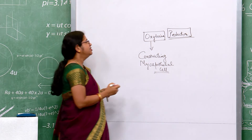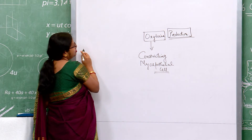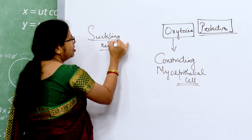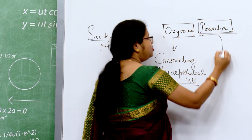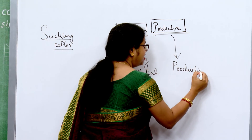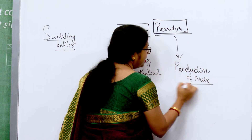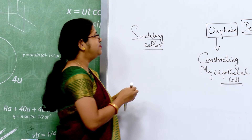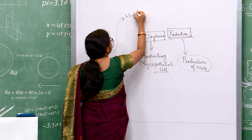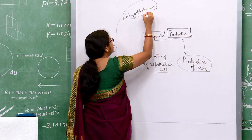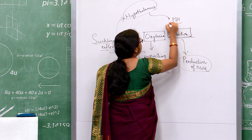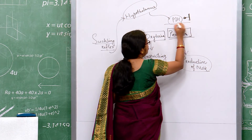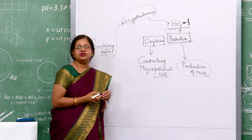In normal conditions, prolactin secretion is inhibited. Only when there is a cry or sound from the baby, or a suckling reflex, does it lead to secretion of prolactin from the pituitary, causing milk production. The rest of the time, an inhibitory molecule — the prolactin inhibitory hormone — prevents prolactin secretion. Once the suckling reflex signal goes to the hypothalamus, the hypothalamus negatively stimulates that prolactin inhibitory hormone, shutting it down and thereby leading to secretion of prolactin.